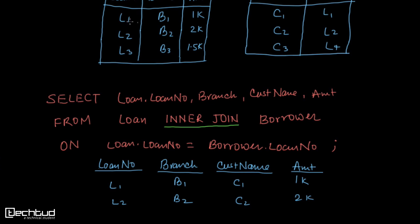Here we have L1, and across L1 we have L1 in the borrower table. The joining condition is Loan.LoanNo equals Borrower.LoanNo, so we have L1 equals L1. This first tuple will be selected: L1, B1, C1, 1K. Now for L2, we have L2 in the borrower table as well, so these tuples will be joined: L2, B2, C2, 2K.